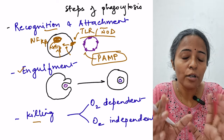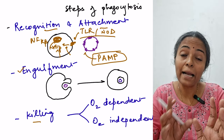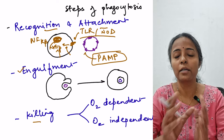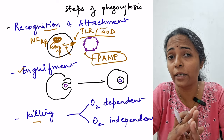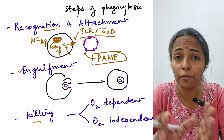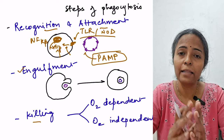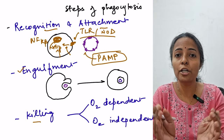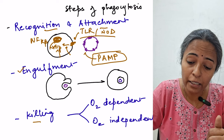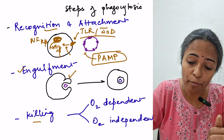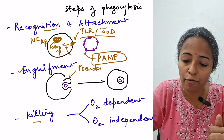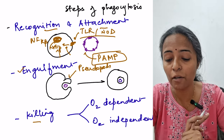Second, these downstream events cause changes in the actin and myosin configuration within the cell. Actin is a protein important for cell movement, and the change in configuration alters the shape of the cell, leading to the formation of pseudopods. This initiates the process of engulfment.